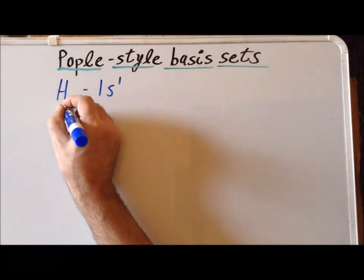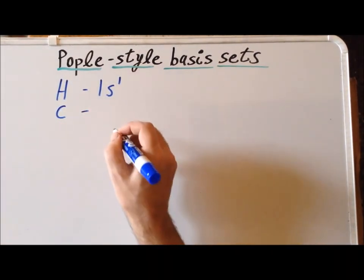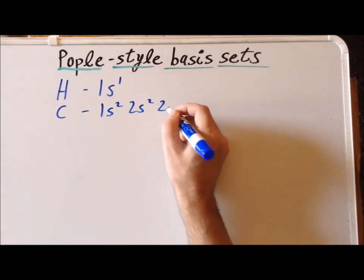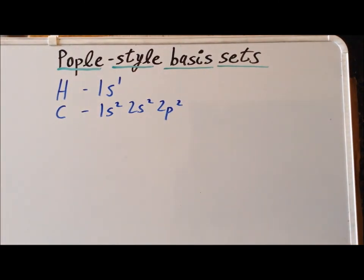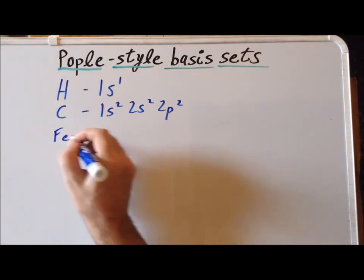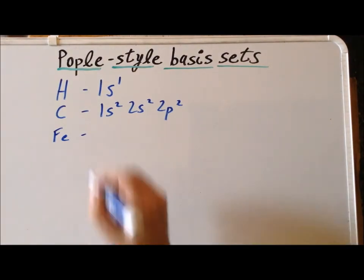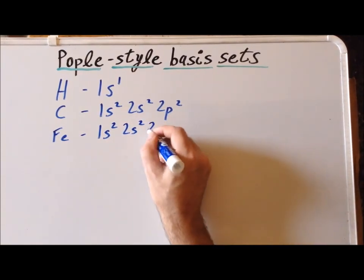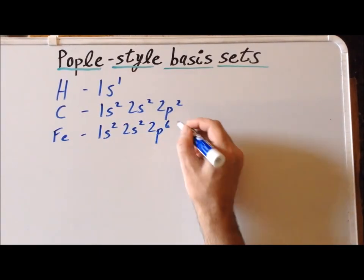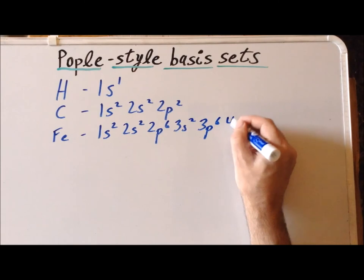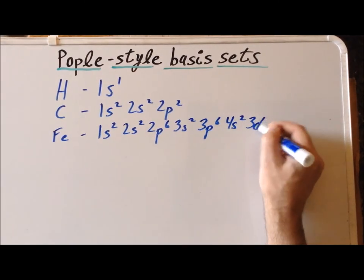The second important element we will look at is carbon, which has electron configuration of 1s2, 2s2, 2p2. Carbon is a prototypical heavy element. The third element we will look at is iron, a transition metal, which has a much more extensive electron configuration of 1s2, 2s2, 2p6, 3s2, 3p6, 4s2, and 3d6.